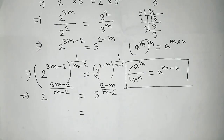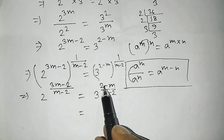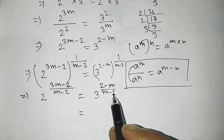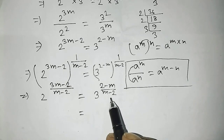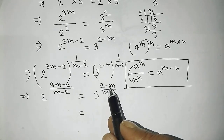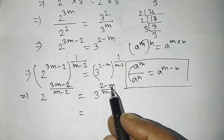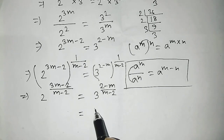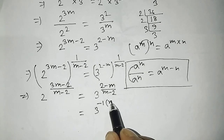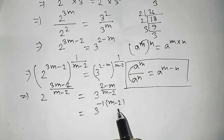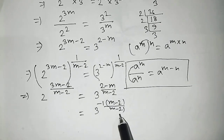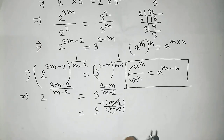Now look here — we have 2 minus m in the numerator and m minus 2 in the denominator. Take minus as common from the numerator: 2 minus m becomes minus of m minus 2. So the numerator also becomes m minus 2. Then m minus 2 divided by m minus 2 cancels out, leaving 3 to the power minus 1.